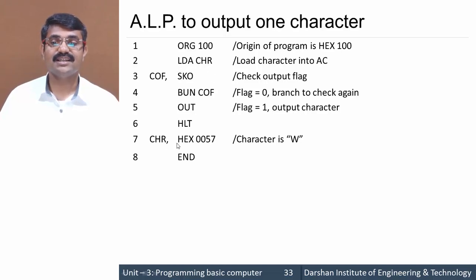Then we are checking the output flag FGO - skip on output flag. If output flag is 1, then skip the next instruction. So we need not execute this BUN instruction.